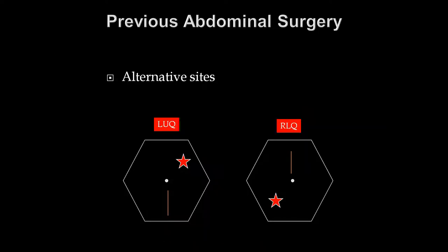In cases of difficulty, such as previous abdominal surgeries — especially if the patient had a lower abdominal midline scar — one may prefer the left upper quadrant as the site of Veress needle insertion, what we call Palmer's point. Palmer's point is located in the left upper quadrant along the mid-clavicular line, just below the costal margin. In cases of upper abdominal scar, one may prefer the right lower quadrant. We normally avoid the left lower quadrant mainly because the sigmoid colon is very often adherent there.